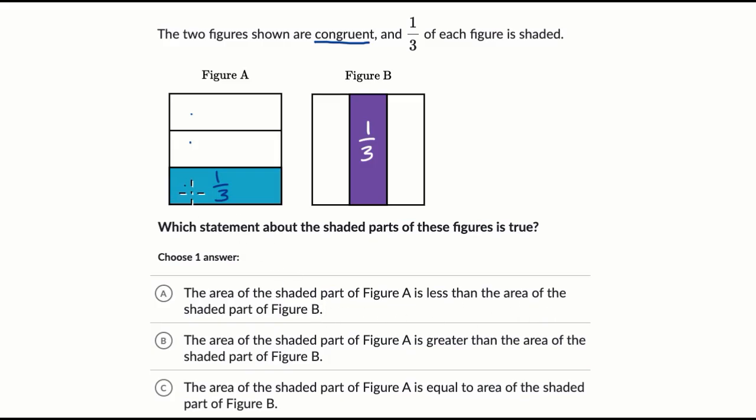Well, they're saying that this area right over here is less than that area. Well, no. Figure A and Figure B are congruent, so their total area is the same. So one-third of their total area would also be the same. So this blue or teal area and this purple area are going to be the same. One's not bigger than the other, so we can rule that one out.